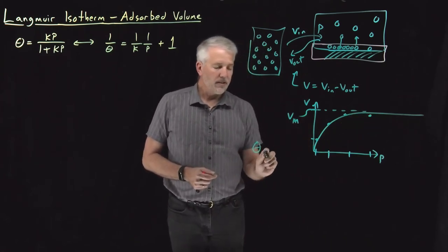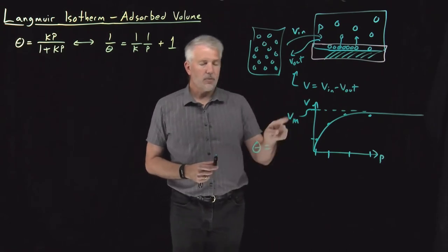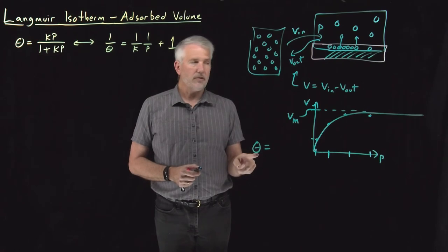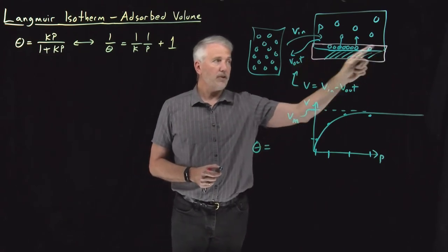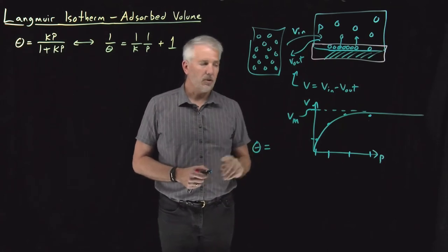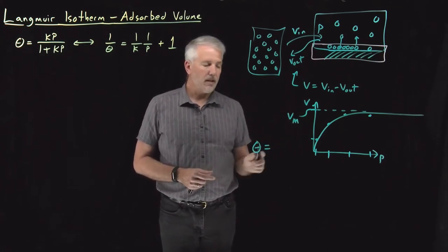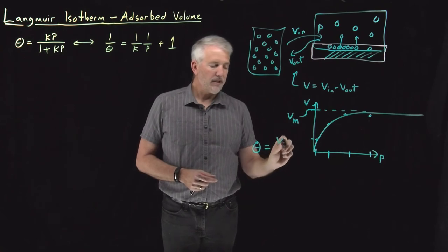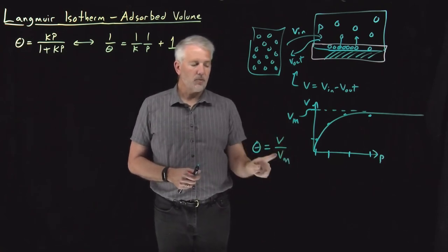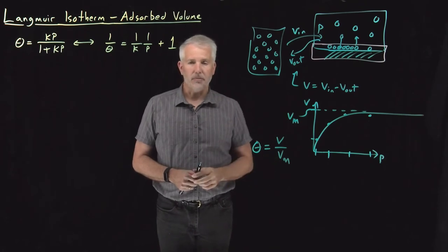If we want to connect these adsorbed volume measurements to surface coverage, what we know is that the surface coverage is one only when I've filled the whole monolayer, when I've put a molecule at every possible surface site. So, when V is equal to Vm, then we've got full coverage. In fact, the surface coverage is the total volume relative to that maximum volume that we can get.